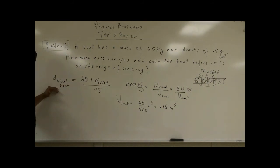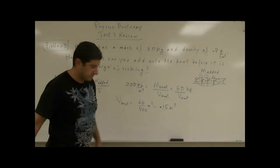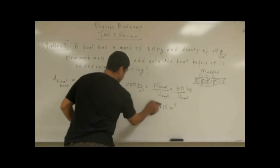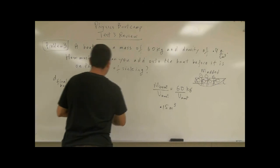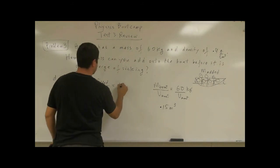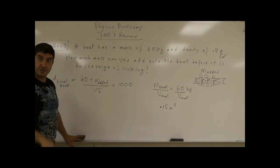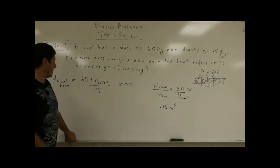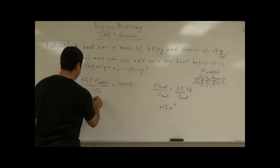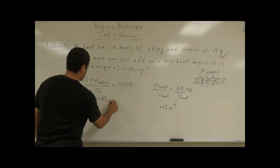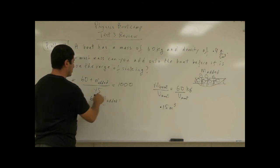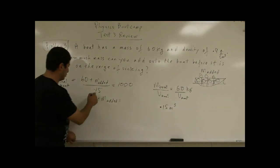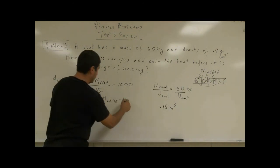And when does the boat start sinking? When its final density reaches 1,000. The density of water is 1,000. So if the final density reaches 1,000 kilograms per cubic meter, then the added mass we can solve for that. So what is that going to be? 60 plus the added mass is equal to 1,000 times 0.15, what is that equal to? 150.